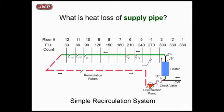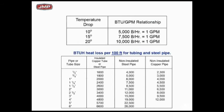Let's look at the simple recirculation system we reviewed earlier with 300 feet of pipe. B&G put together a quick chart: with a 10-degree delta T, one GPM will allow you to offset 5,000 BTUs. With a 20-degree delta T, one GPM offsets 10,000 BTUs. In other words, if my heat loss in a piece of pipe is 10,000 BTUs, I could flow one GPM through it at a 20-degree delta T, or two GPM at a 10-degree drop. This is a quick tabular method for calculating the GPM required to offset heat loss in the supply pipe.